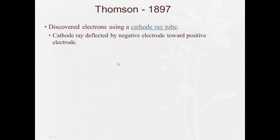All right, so the cathode ray deflected by negative electrode towards the positive electrode. So he was shooting the cathode ray, right? Here's the negative electrode, here's the positive electrode, and the ray was deflected towards the positive. Why is that? Well, opposites attract and likes repel. So if something was attracted towards the positive, it must be negative. So he demonstrated that the electron is negatively charged.